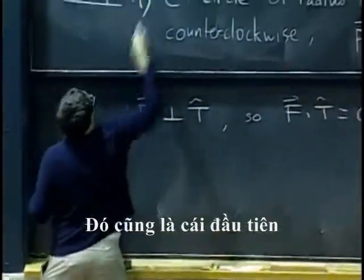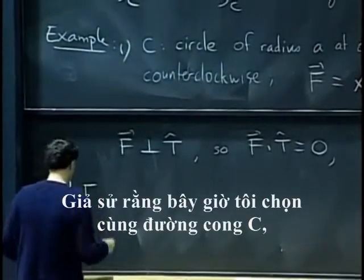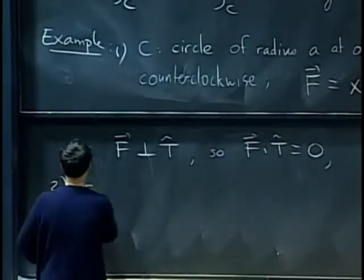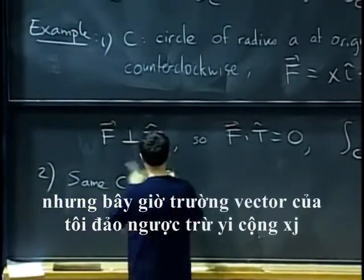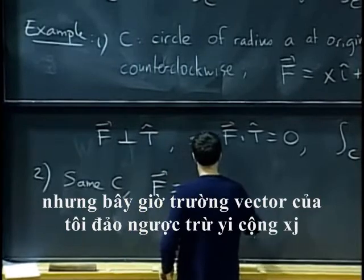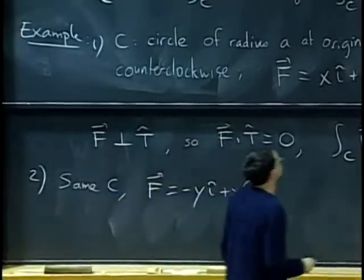Let's just do a last one. That was the first one. Let's say now that I take the same curve, but now my vector field is the one that rotates, negative yi plus xj.